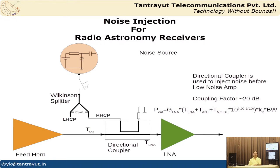We also need to consider the second, orthogonal polarization — we must inject noise into both polarizations. One way to do this is to add a power splitter after the RF switch: when the control signal is given, the noise passes through the RF switch and a Wilkinson power divider splits the noise power equally between two ports — one going to the left-hand circular polarization and the other to the right-hand circular polarization — providing equal noise power before each LNA.